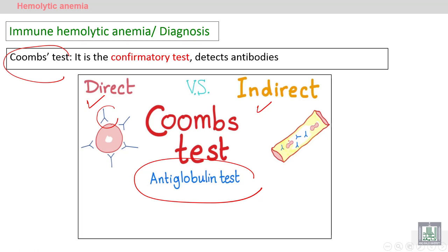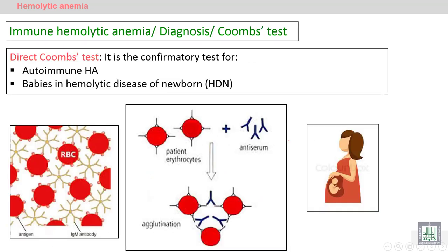The direct Coombs test is the confirmatory test for the baby in a condition called hemolytic disease of the newborn. The mother forms antibodies that target the red blood cells of the baby, so the red blood cells are coated by the antibodies. Therefore, the direct antiglobulin test is the confirmatory test for the baby.